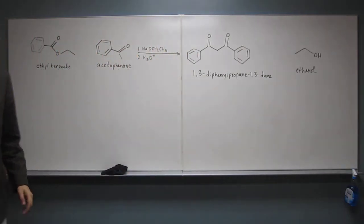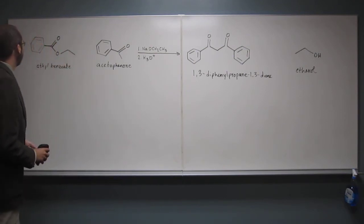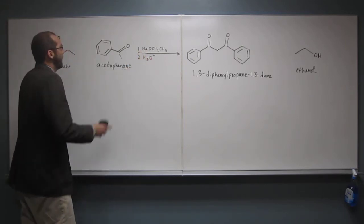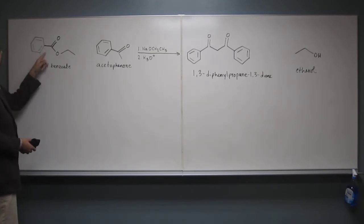So remember, what do we do when we're doing mechanisms? We're going to erase everything except for the molecules that are reacting in that initial step. So when we look here, we've got sodium ethoxide. That's actually going to react with the alpha carbons, right? So when we look here, we look at this molecule.